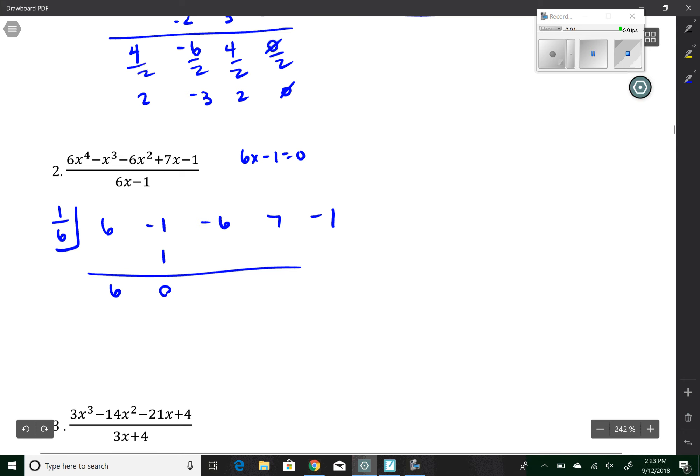1/6 times 6 is 1. That becomes nothing. Anything times nothing is nothing. That becomes negative 6. That was kind of a quick little process there. 1/6 times negative 6 is negative 1. That becomes 6. 1/6 of 6 is 1. Remainder, nothing.